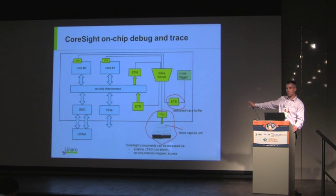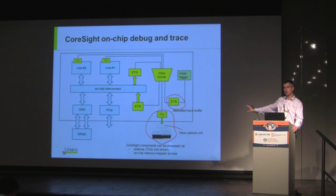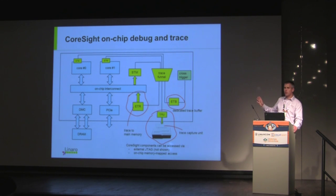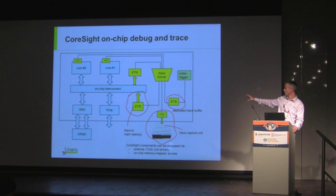We have a component that sends trace off-chip to an external trace capture unit. This is very useful on things like development boards and prototyping boards. It tends to be difficult on production devices simply because of lack of pins and lack of external sockets. And more recently, we have something called an Embedded Trace Router, which funnels the trace back to the main system interconnect and there to main memory, allowing you to capture a lot more trace.